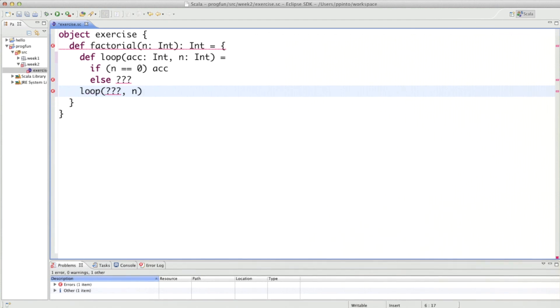So the question is, what do we need to do to fill in the question marks here? The first task is to fill in something for the initial value of the accumulator. Here it's pretty clear that we say, if n equals zero, then the accumulator is returned, so it has to be the right value for n equals zero, and that would be one. So we pass one here. The second question is, what do we do in the case where n is not equal to zero? And the idea there is, we would go again into the loop with the accumulator times n, the current value, and n reduced by one.